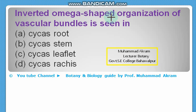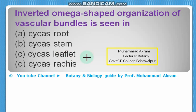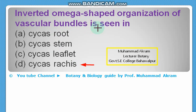In inverted omega-shaped organization, a vascular bundle is seen in — Cycas roots? No. Cycas stem? No. Cycas leaflet? No. Yes, the right option is Cycas rachis. The rachis has inverted omega-shaped organization of vascular bundles.